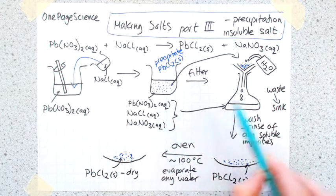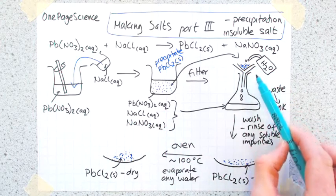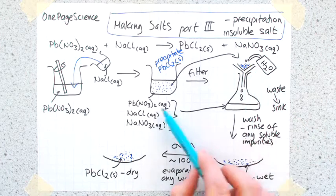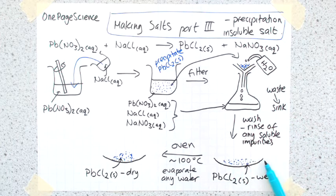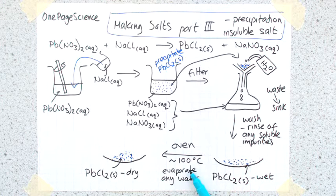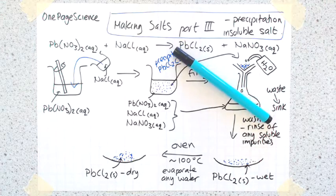You filter to keep the solid and get rid of all the soluble things you don't want. Give it a quick rinse with water to wash away any last bits of solution that might be left on the solid. Then take your wet solid salt, stick it in an oven at 100 degrees to give you a nice bit of dry solid. That's making salts part three if you've got a precipitate.